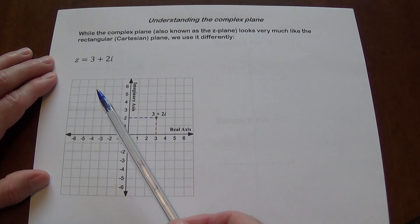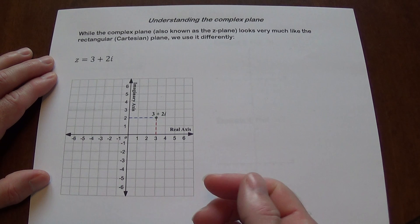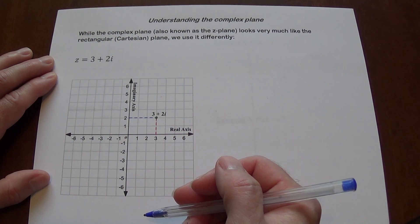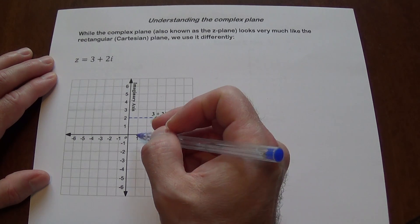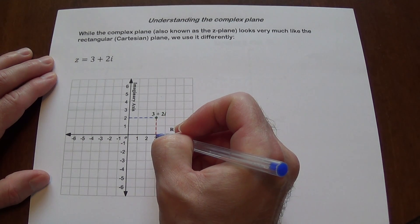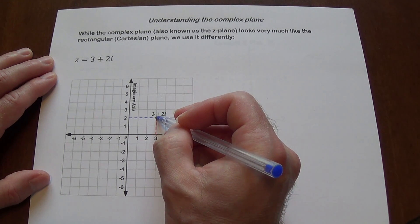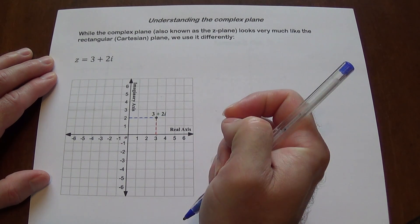It's kind of like going with coordinates, although you're not really plotting points as you normally do with a rectangular plane. So what we do is we get 3, that's real, 2i imaginary, and that's what the number is going to be.